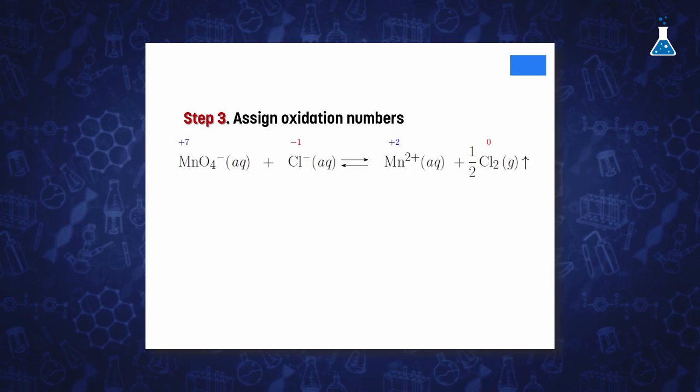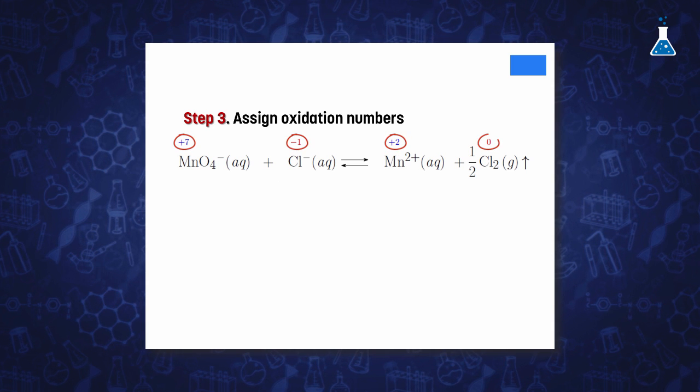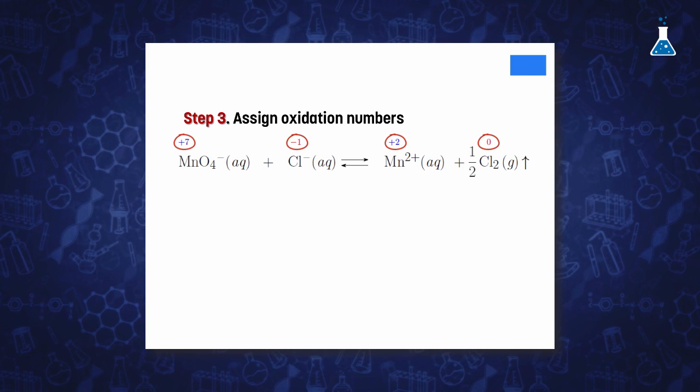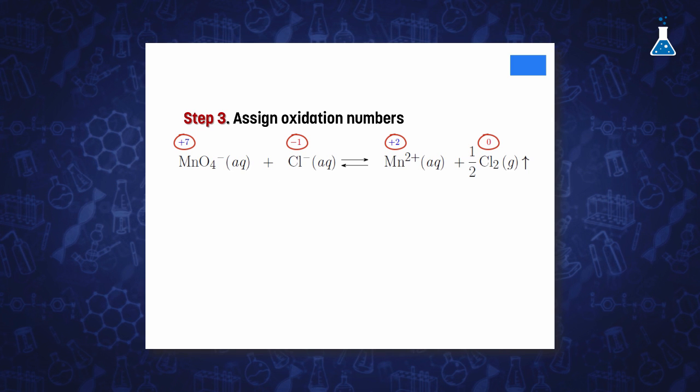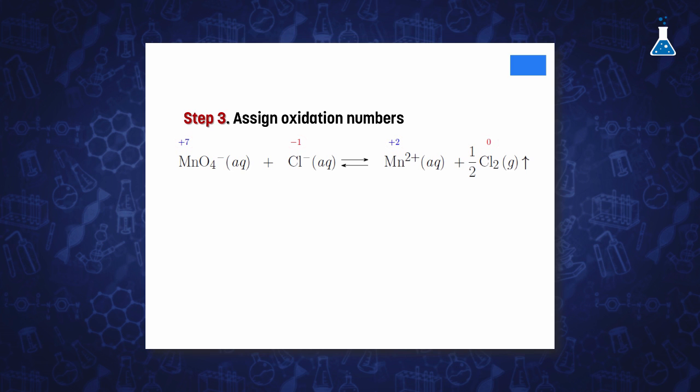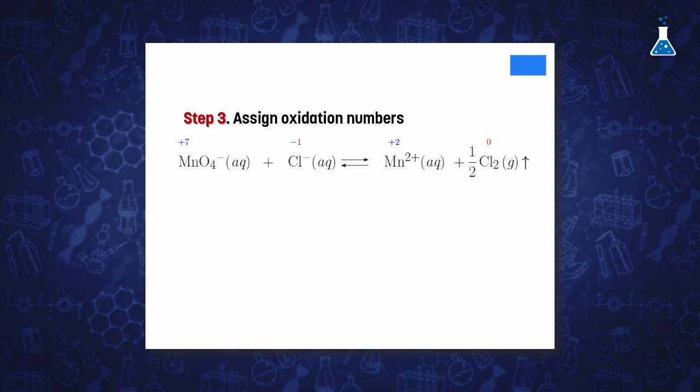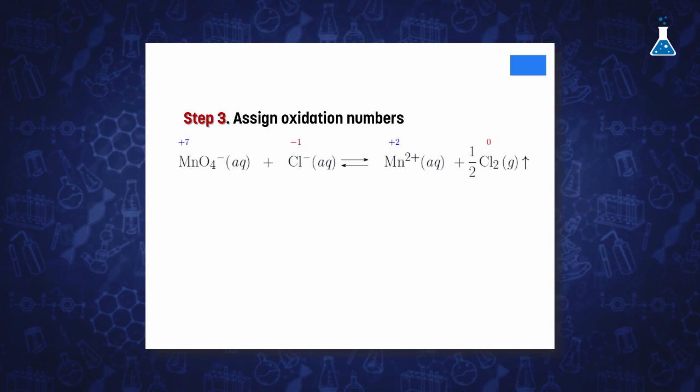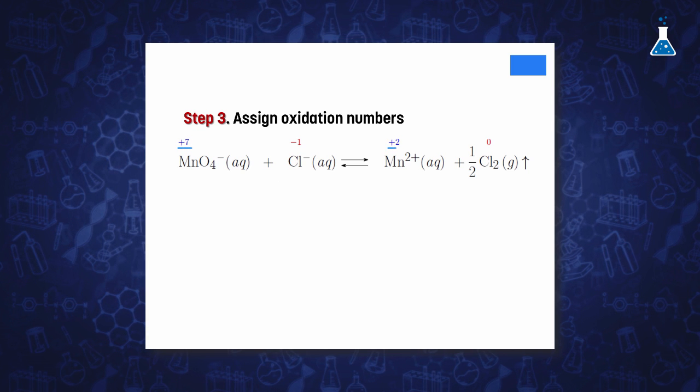The next step is to assign oxidation numbers following the rules explained in the previous video, which will allow us to know which substance is oxidized and which one is reduced. In this example, manganese reduced its oxidation number from plus 7 to plus 2.